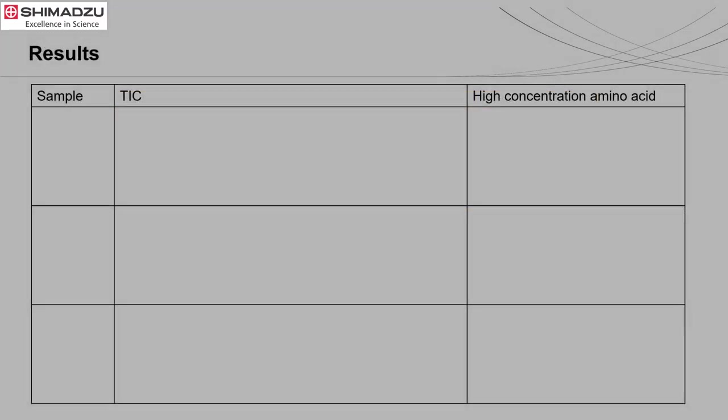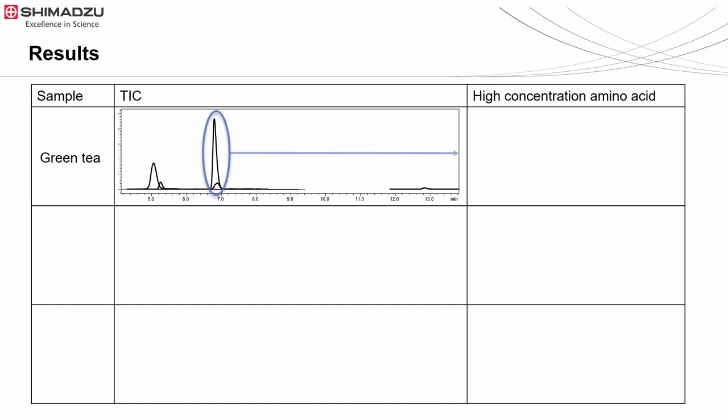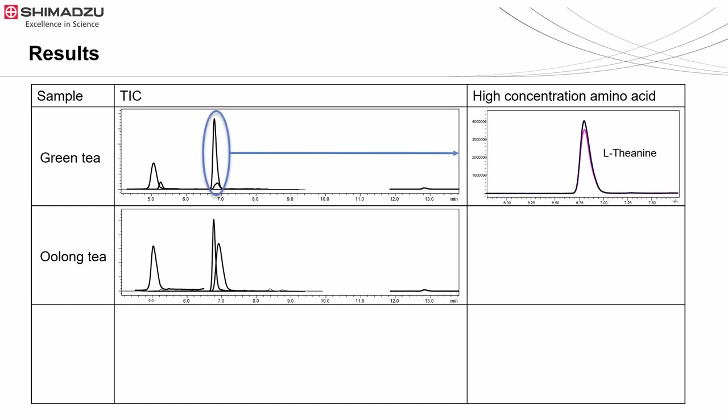Now, let's look at our sample results. Green tea is detected with several amino acids. Among them, L-theanine is highest in concentration. Besides, as you can see, oolong tea shows similar TIC to green tea and is detected with high concentration of L-theanine too. L-theanine is an amino acid found mainly in green and black tea and is responsible for its umami taste.